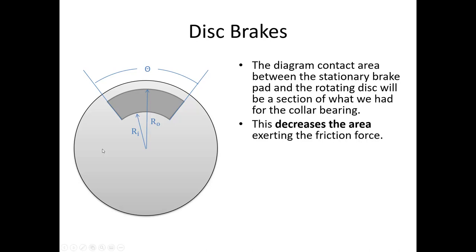This decreases the area exerting the friction force. Say I've got maybe 60 degrees - that's one-sixth of the entire circular annulus. So we have less area, which is going to decrease the friction force. But because we have less area, we have more pressure in that area. Because we've only got one-sixth of the original area, the pressure within that area is six times higher.